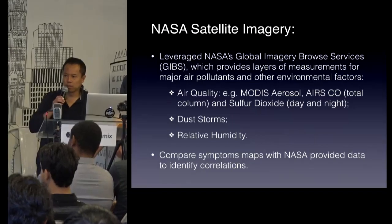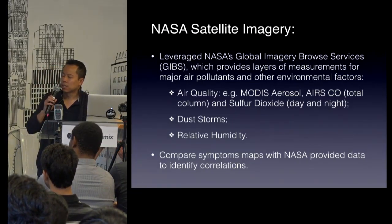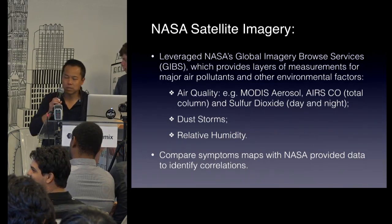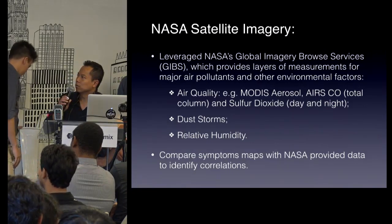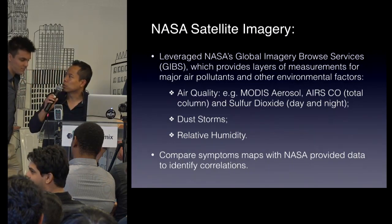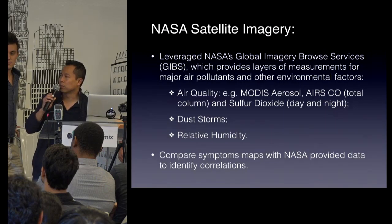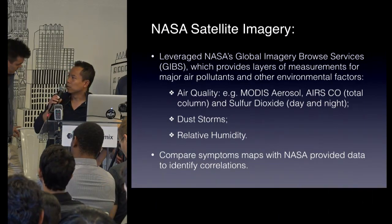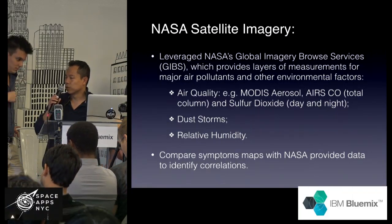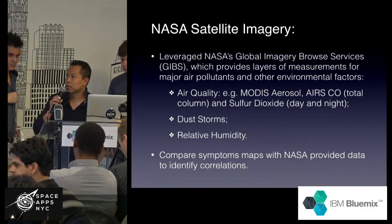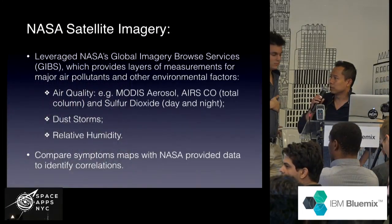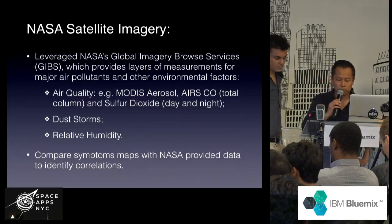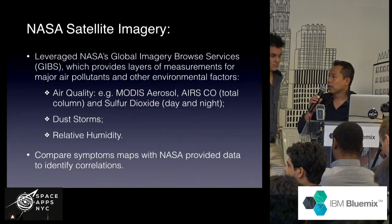For the environmental data, we were able to leverage the impressive database from NASA — the satellite imagery database called GIBBS. We focused on the maps showing the concentration levels of major air pollutants like carbon monoxide, sulfur dioxide, and ozone. We also looked at dust score, because we know that dust score may have an impact on human health. The idea is to compare the heat maps generated using Wolfram with the maps provided by NASA in order to identify correlations and raise awareness.